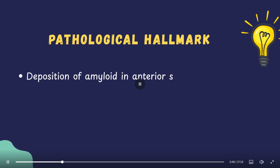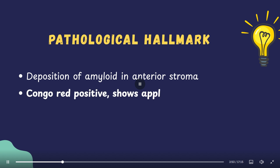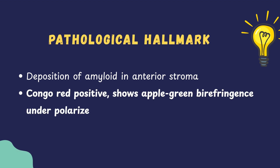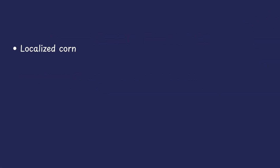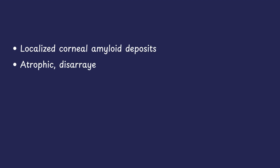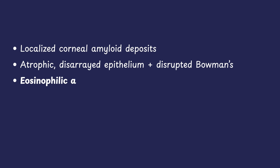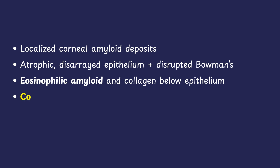Let's talk about the pathology. The hallmark of lattice corneal dystrophy is the deposition of amyloid in the anterior stroma. These localized amyloid deposits can disrupt the epithelium, Bowman's layer, and stroma, but the endothelium and Descemet's membrane remain normal. On histopathology, the amyloid appears eosinophilic on H&E stain and stains positive with Congo red, thioflavin T, and crystal violet.